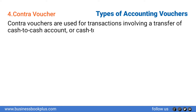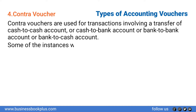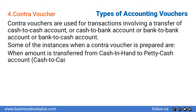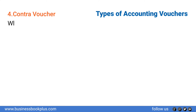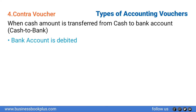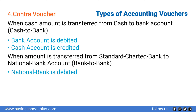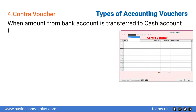Number four: Contra Voucher. Contra vouchers are used for transactions involving a transfer of cash-to-cash account, cash-to-bank account, bank-to-bank account, or bank-to-cash account. For example: when an amount is transferred from cash in hand to petty cash account, the petty cash account is debited and cash in hand is credited. When cash is transferred to a bank account, the bank account is debited and the cash account is credited. For bank-to-bank transfers, such as from Standard Chartered Bank to National Bank, the National Bank account is debited and Standard Chartered Bank is credited. For bank-to-cash transfers, the cash account is debited and the bank account is credited.